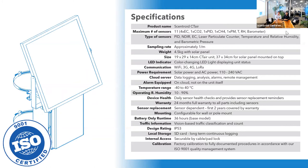In terms of the unit itself, if you're at the location, you can look up and see a color-changing LED displaying the unit status in case something is going wrong or to see how the unit is operating. This unit communicates wirelessly through many communication methods that we can customize. We have WiFi, 3G and 4G networks, and LoRa communication — we'll go over those in detail.